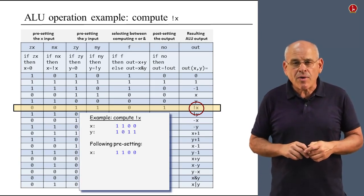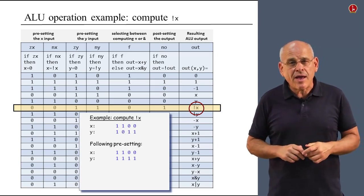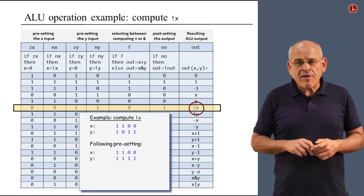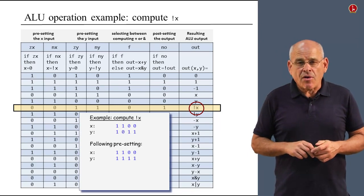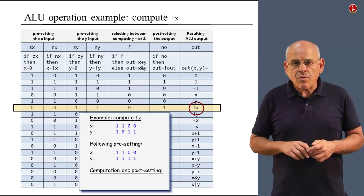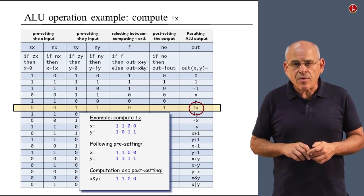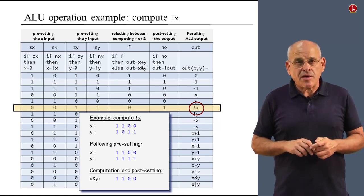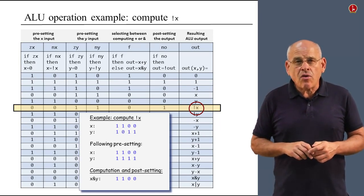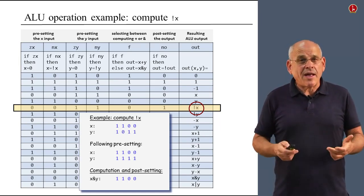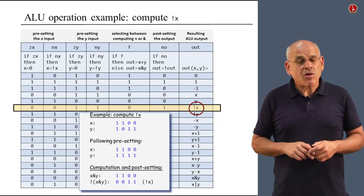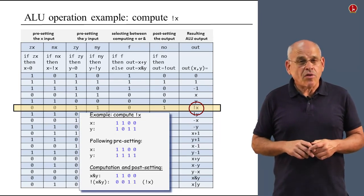And then we move on to the y input and we see that zy equals 1. So we zero the y input and ny equals 1. So we negate it and what we get is the result 1 1 1 1. Moving along, f is 0 and if f is 0, we want to compute x and y. So we compute x and y and we get 1 1 0 0. This is a bitwise and. And finally, no is 1, so we negate the result and we get 0 0 1 1. Lo and behold, 0 0 1 1 is exactly not of x.